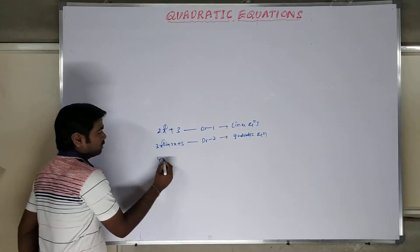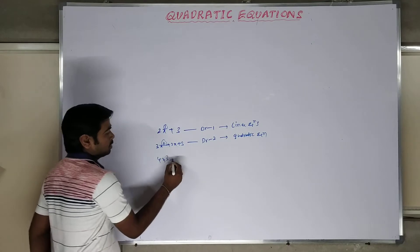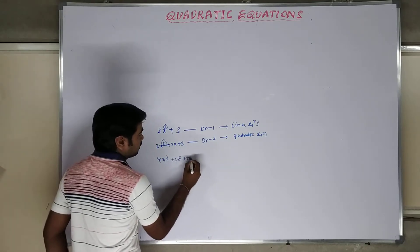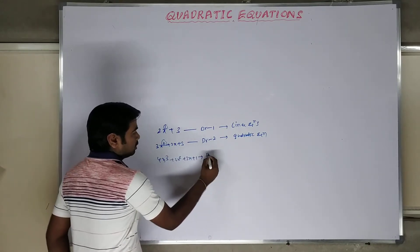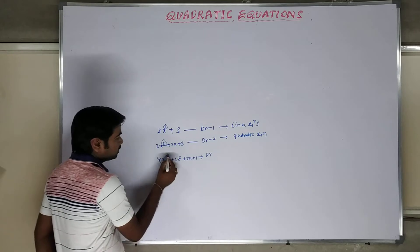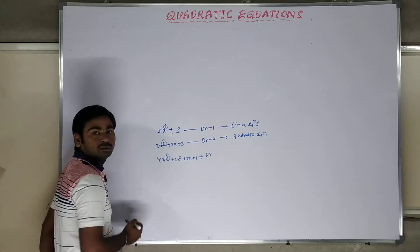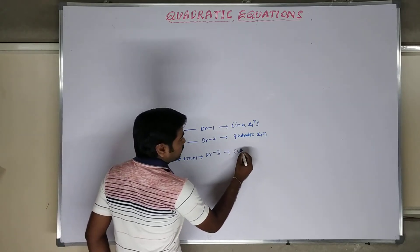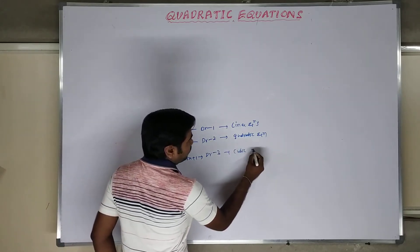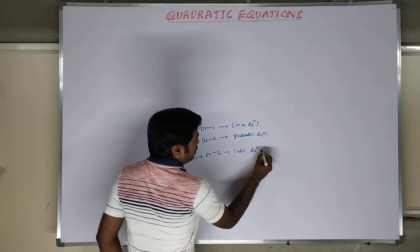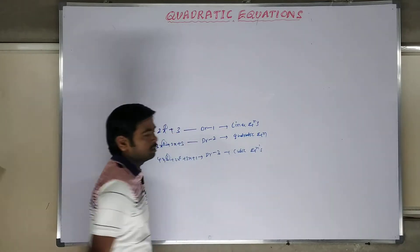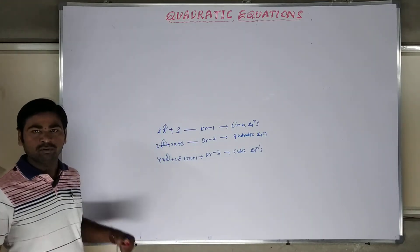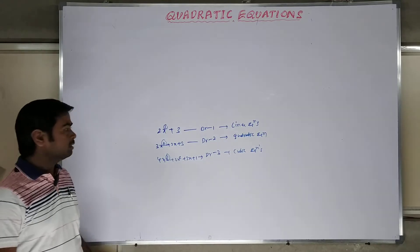Let us take 4x³ plus 2x² plus 3x plus 1 as a third example. The degree here is 3, so this is called a cubic equation. So these are 3 different types of equations we are having.